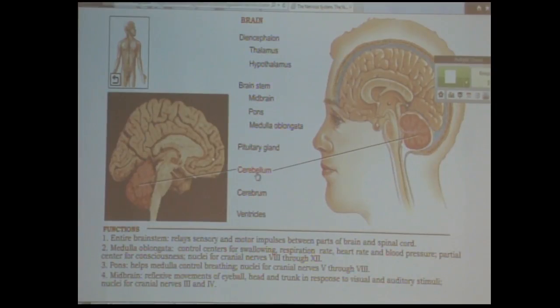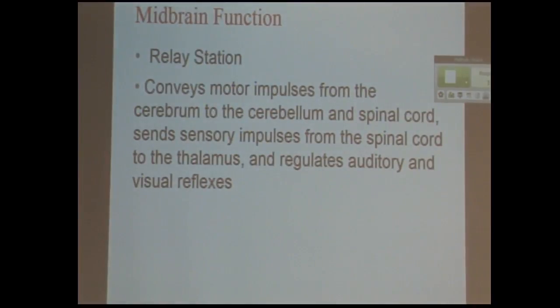And we've got cerebellum down there. There's the pituitary gland, which we'll talk about in Bio 202. And then the brain stem, you've got the medulla, the pons, the midbrain, and then the hypothalamus, the thalamus. So let's talk about what each of those do.